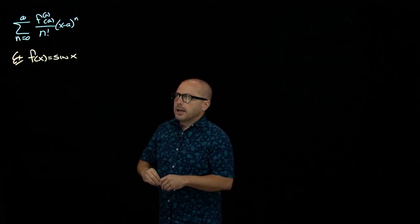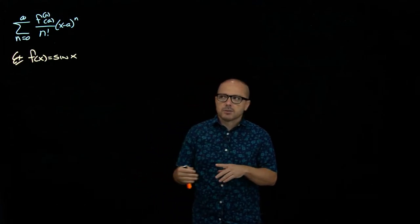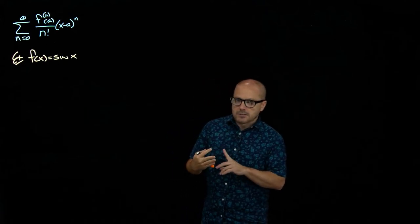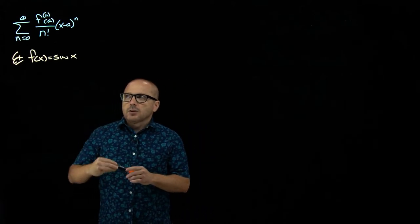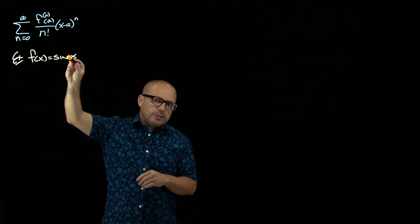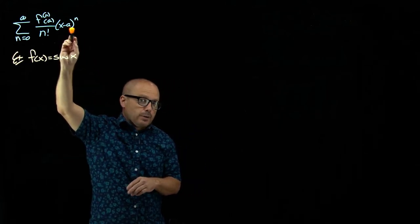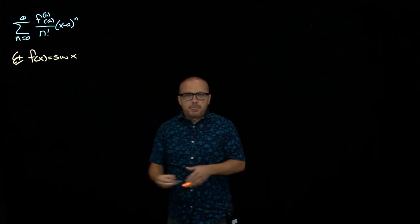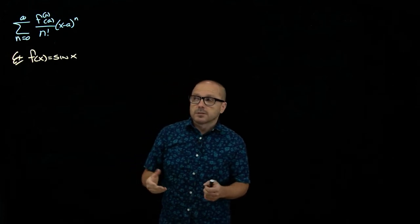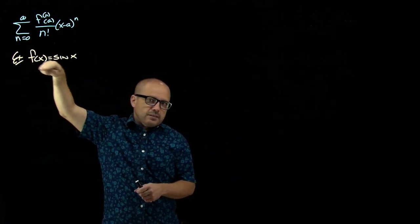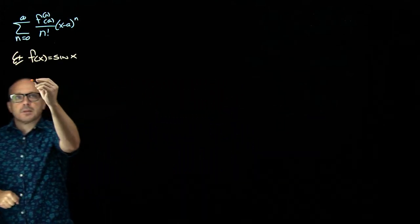So again, first decision to be made is where to center this thing. Now we have a few more choices with sine than we did with e to the x. We know sine at zero, pi over six, pi over four, pi over three, and so on. But keep in mind, not only do we want to know the value of this function and its derivatives at a, we also put that value in here, it's x minus that. And I don't want to have a bunch of terms with pi in it, pi over three, pi over six, because pi is irrational, and we'd have an approximation within our approximation. So the best value would be a equals zero, because that makes this nice, and it makes this nice.